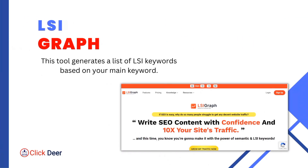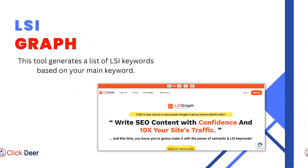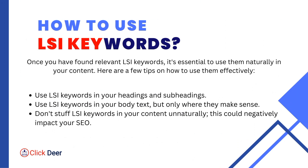The third option is a paid option. If you have the budget, you can use LSI Graph — a tool specially designed for finding LSI keywords. Here is a snapshot of their homepage. You can go to their website and purchase a subscription to use LSI Graph for your keyword research campaigns.